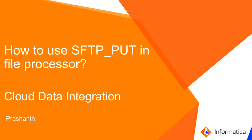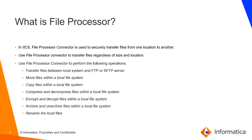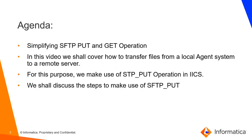So what is the file processor connector? The file processor connector can be used to securely transfer files from one location to another, regardless of the size and location. The file processor connector can perform multiple operations, namely FTP and SFTP operations like SFTP get and SFTP put. You can move files, copy files, compress and decompress, encrypt and decrypt, archive and unarchive, and rename local files. But in today's session we are going to mainly focus on the SFTP put operation.